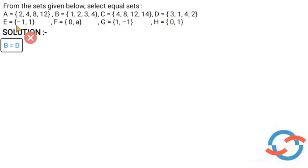Next, E. E is equal to 4. F is equal to 4. G is equal to 3 — G should not be equal, and H should not be equal to 4. So G and H should not be equal to 4.